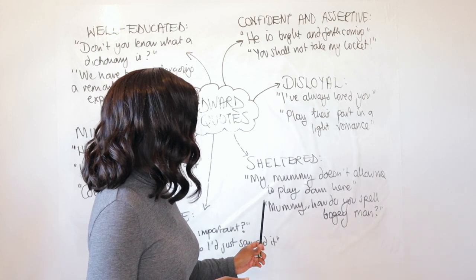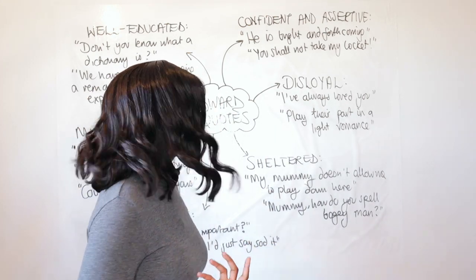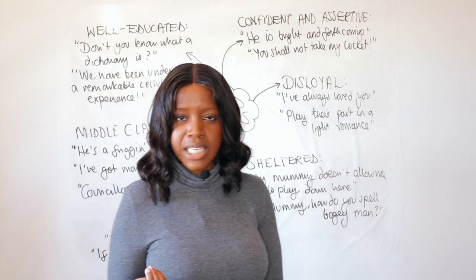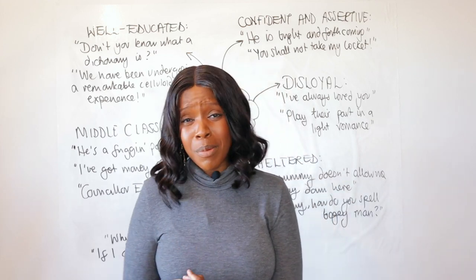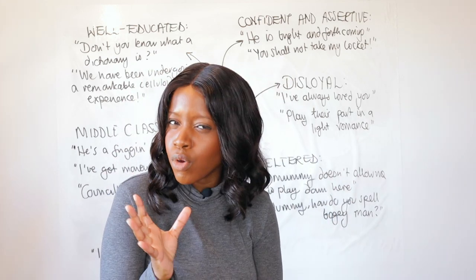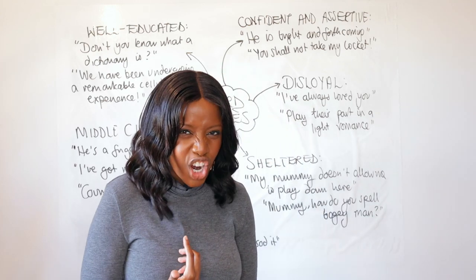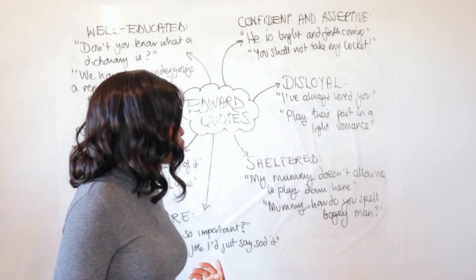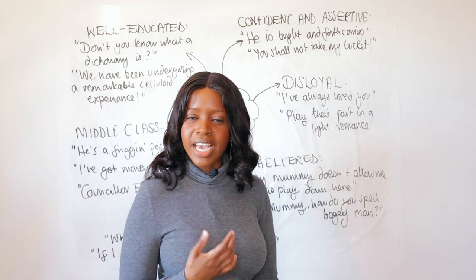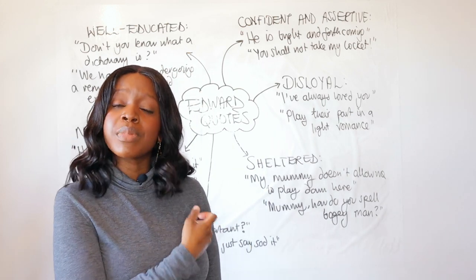Edward is very protected and cared for by his mom and dad. This is illustrated through quotes — even the fact that he calls his mom 'Mommy.' When he first meets the kids aged seven, he says 'My mommy doesn't allow me to play down here.' He's being a little bit rebellious but acknowledges that he's very sheltered. He also states 'Mommy, how do you spell bogeyman?' — showing a strong sense of dependence on his mother, which Mickey simply doesn't have.